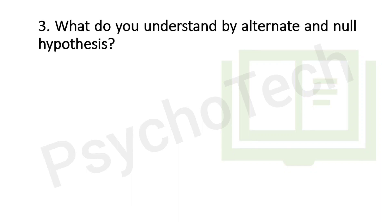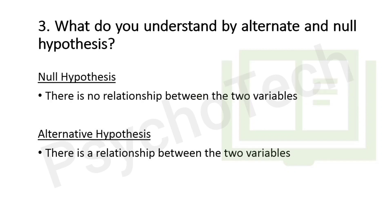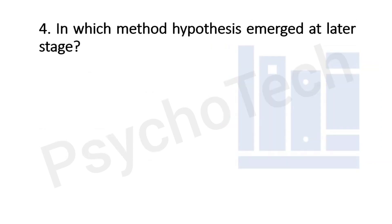The next question is: what do you understand by alternate and null hypothesis? The alternative hypothesis states that there is a relationship between the two variables being studied, where one variable has an effect on the other. The null hypothesis states that there is no relationship between the two variables, where one variable does not affect the other. For example, studying height and weight: the null hypothesis states there is no significant relationship between weight and height, while the alternative hypothesis states there will be a significant relationship. In mixed and qualitative methods, the hypothesis emerges at a later stage.